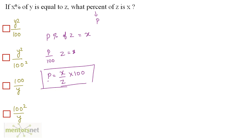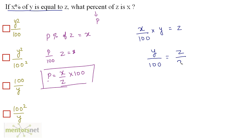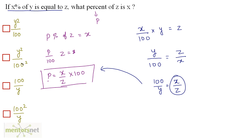We can find this using what is given: X percent of Y is equal to Z, so X upon 100 times Y equals Z. From this we can derive Y upon 100 equals Z upon X, and inverting gives us 100 upon Y equals X upon Z.